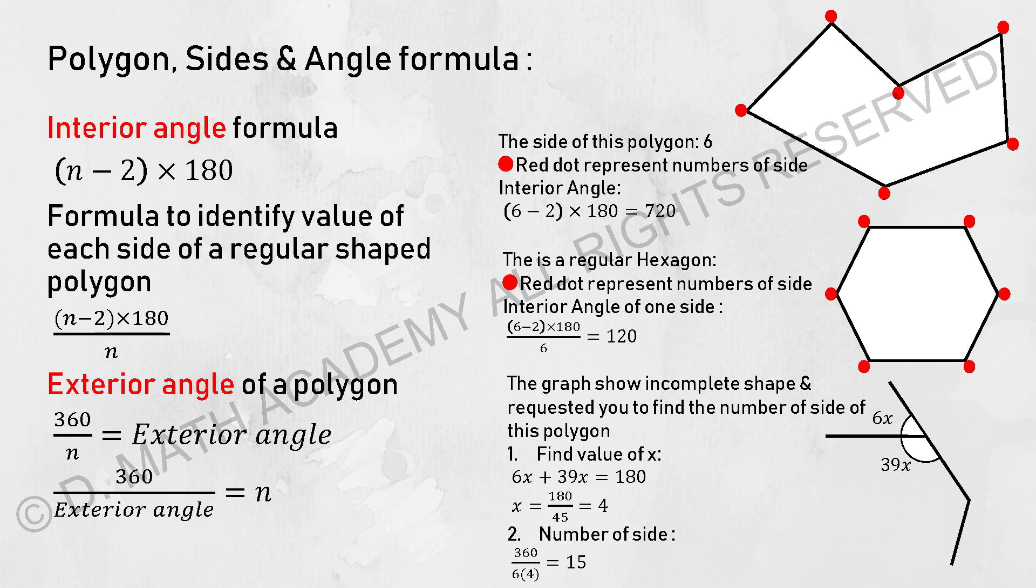Or sometimes they will reverse this question up and ask you to identify the number of sides by giving you the interior or exterior angle value. Then you are required to take the 360 divided by the exterior angle, then you will get the number of sides.